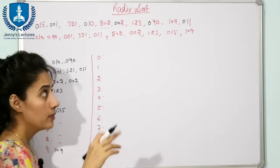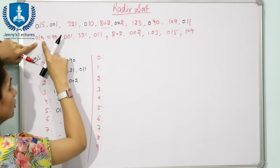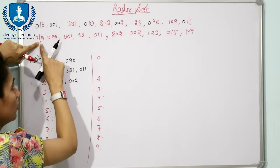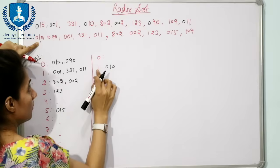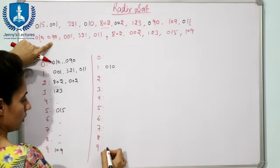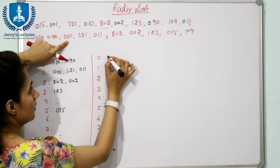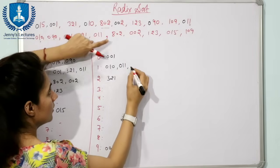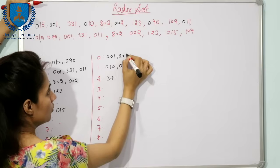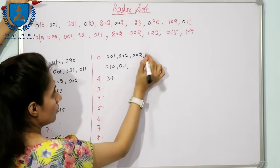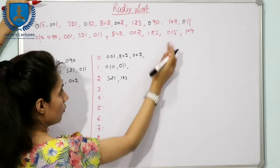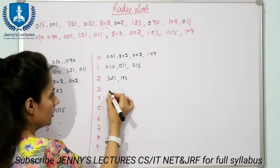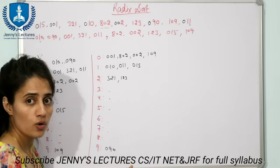Again we take 10 buckets and check each number's tens digit. For 010 the tens digit is 1, so it goes to bucket 1. For 090, digit is 9, goes to bucket 9. For 001 the tens digit is 0, goes to bucket 0. For 321 tens digit is 2, bucket 2. For 011 tens digit is 1, bucket 1. For 802, tens digit is 0, bucket 0. Remaining buckets are empty.